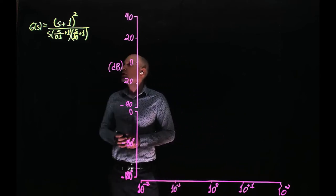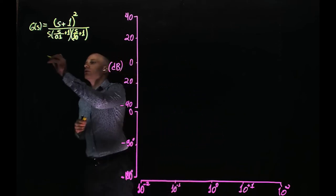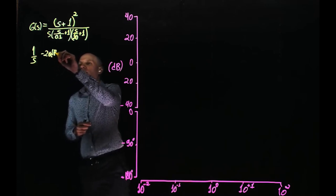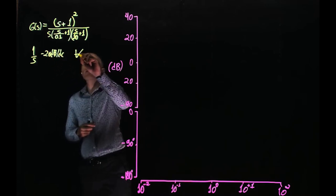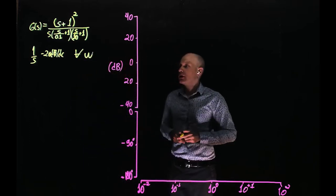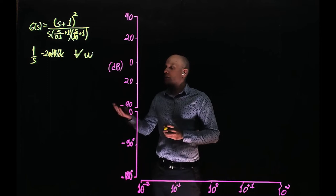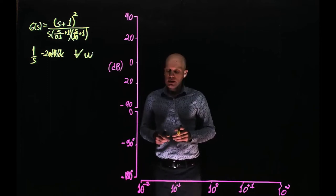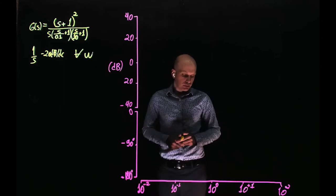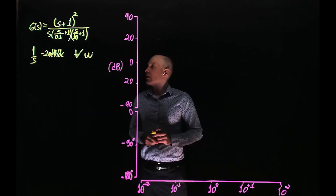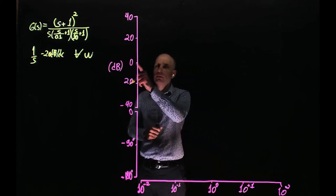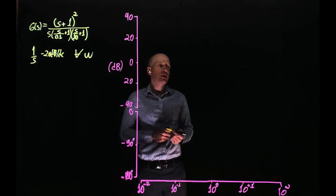However, we have this pole at the origin. This pole at the origin adds a slope of negative 20 decibels per decade for all frequencies. So the only thing acting on the Bode plot in this example is the pole at the origin. What is the magnitude of the Bode plot then at 10 to the power of negative 2? We know that this creates a slope of negative 20 dB per decade that crosses zero magnitude at 1 radian per second.